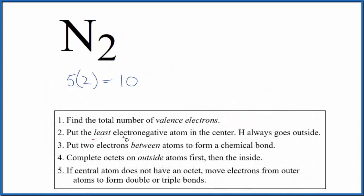With Lewis structures, we put the least electronegative atom in the center, but these are both nitrogens, so their electronegativity is the same. So let's just put two nitrogen atoms, and then we'll put two electrons between these atoms to form the chemical bond, like this. That's our covalent bond.